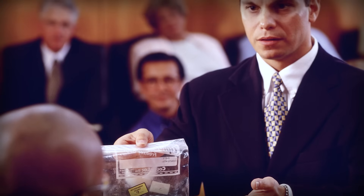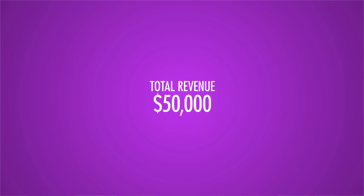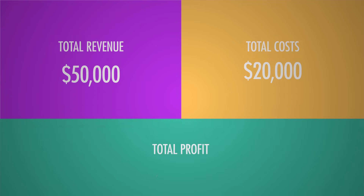Let's say a lawyer stops practicing law and decides to open up a pizza parlor. Let's say his total revenue from selling pizza is $50,000, and he has to pay $20,000 to cover stuff like the ingredients, the oven, rent, and wages. An accountant would calculate his profit — the revenue minus the cost — as $30,000. But an economist recognizes that there's a cost missing: the opportunity cost.